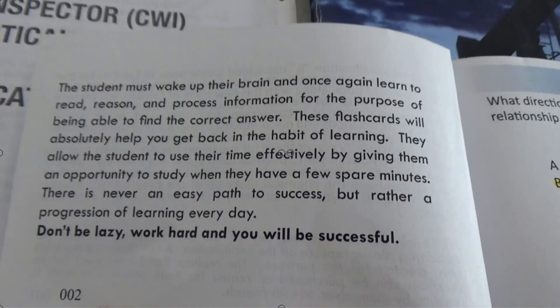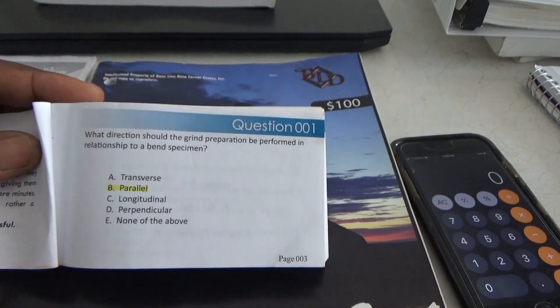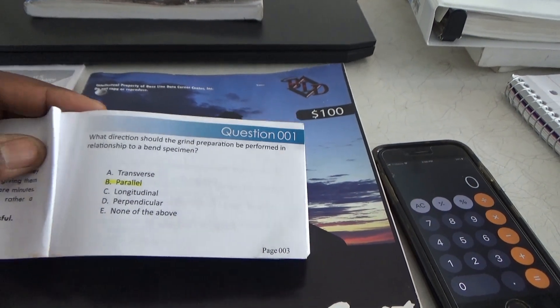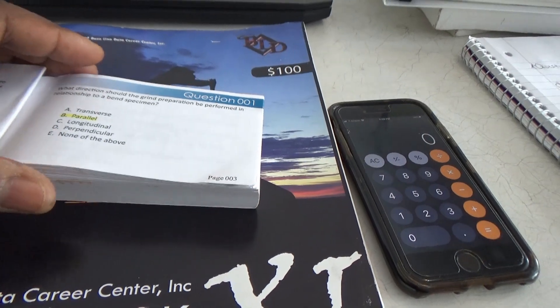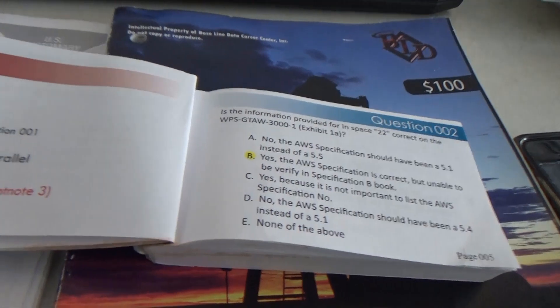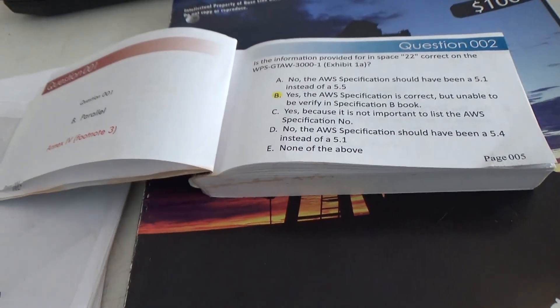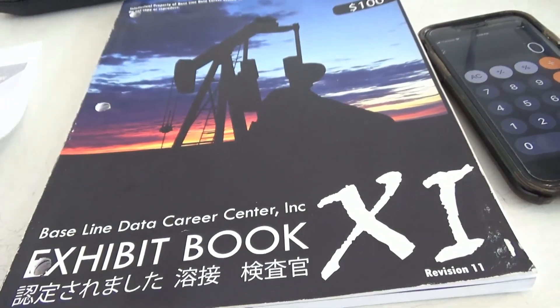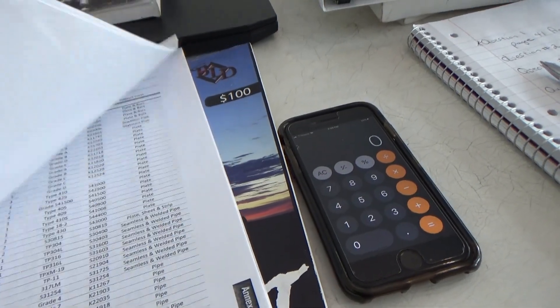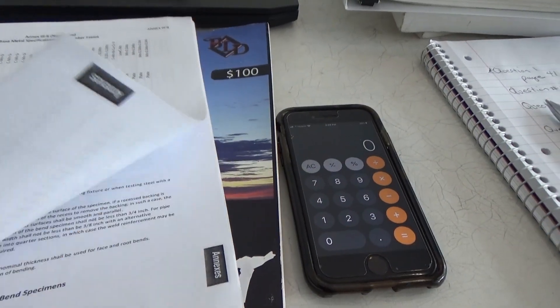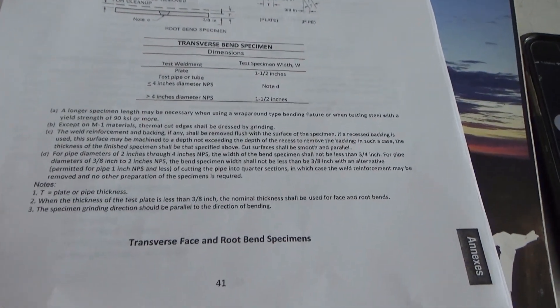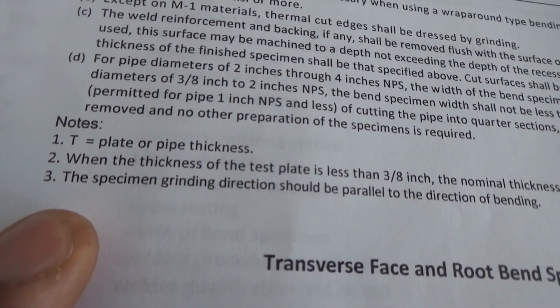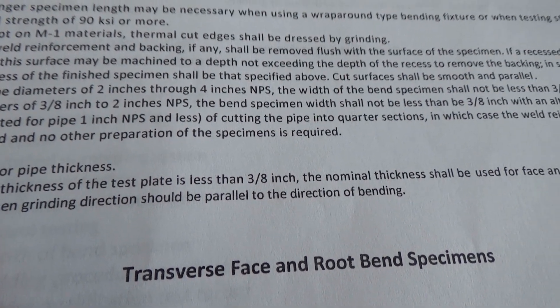Question 1: What direction should the grinding preparation be in relationship to the bend specimen? The answer is parallel. The back of the flashcard tells you to go to Annex 4, footnote 3 in your book of specs, which is on page 41. Footnote 3 states that specimen grinding direction should be parallel to the direction of bending.